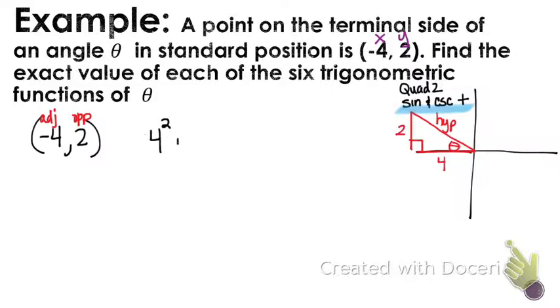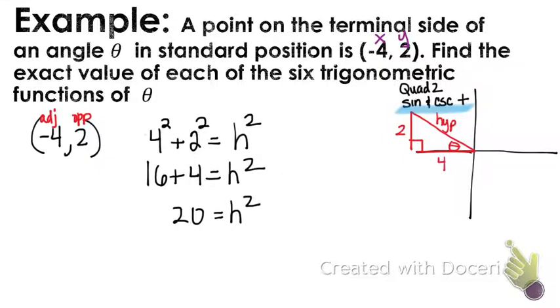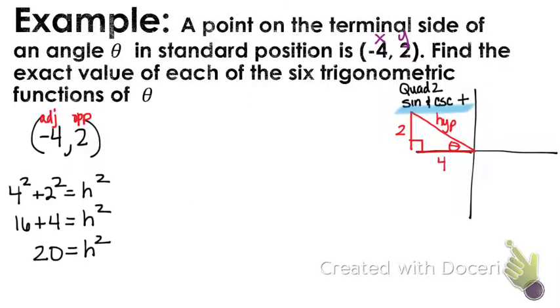So we got 4 squared plus 2 squared equals your hypotenuse squared. So remember, you won't be able to use a calculator on your quiz next Wednesday, so I encourage you to try to do this without a calculator. So 4 squared is 16, 2 squared is 4, so that gives you 20, which was not a perfect square. So that means that we're going to have a radical, which aren't fun, but we know how to handle it.